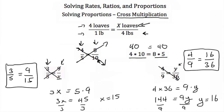Going back to the original bread example with 4 loaves over 1 pound equals x loaves over 4 pounds, I can cross multiply: 4 times 4 equals 1 pound times x. Well, 1x is just x, and 4 times 4 is 16. So x equals 16. That's how I knew I needed 16 loaves for 4 pounds of flour.